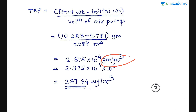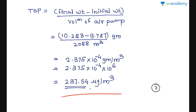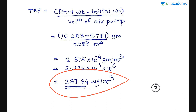Using the TSP formula — final weight minus initial weight divided by volume of air pumped: (10.283 g − 9.787 g) / 2088 m³ = 2.375 × 10⁻⁴ g/m³. Converting to micrograms per cubic meter by multiplying by 10⁶ gives 237.5 µg/m³. This matches option C, which is the correct answer.